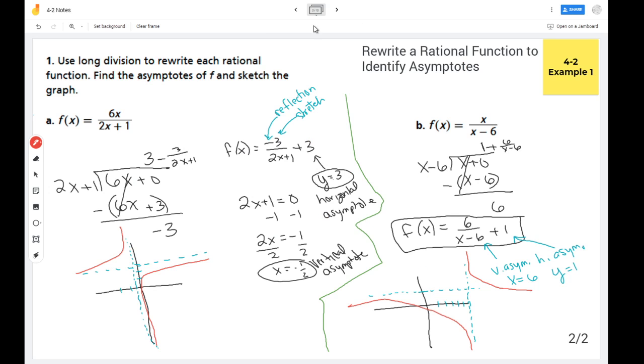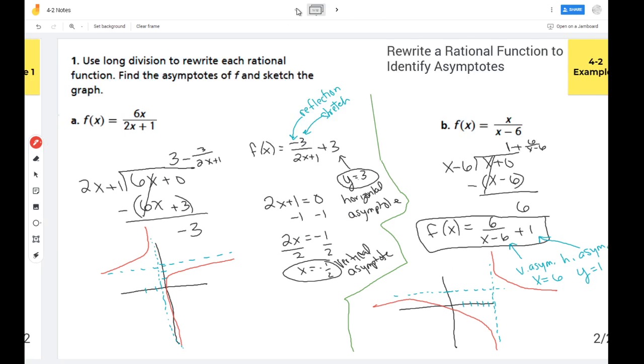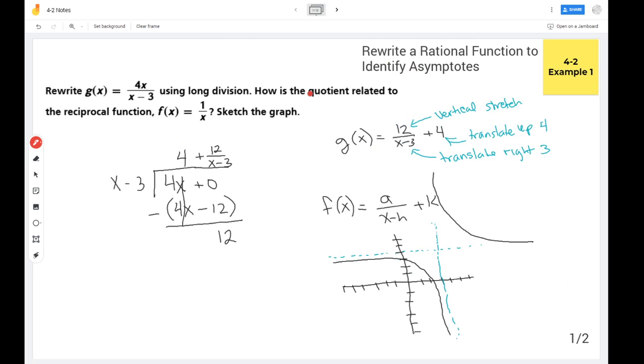So there we have it. That's rewriting a rational function to identify its asymptotes. Until next time.